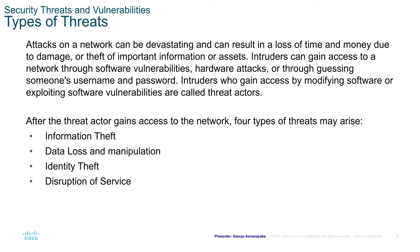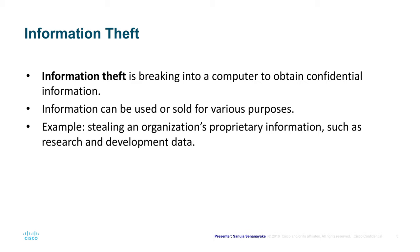The four threat types include information theft, data loss and manipulation, identity theft, and disruption of services. Information theft is breaking into a computer to obtain confidential information, such as social insurance numbers from government systems. Information can be used or sold for various purposes — for example, stealing an organization's proprietary patent license information that can then be sold to another company or used to develop the same product by a different entity.